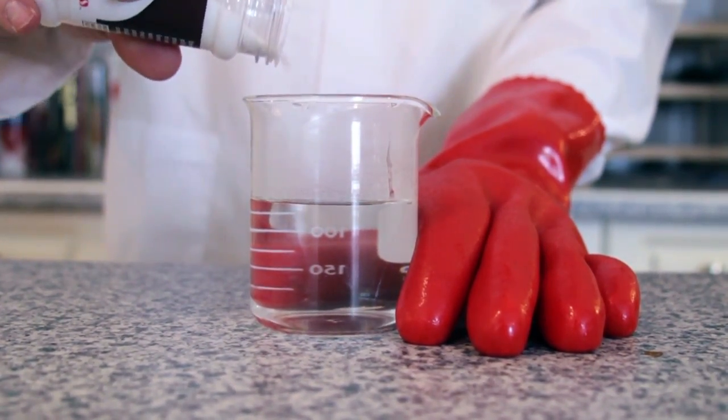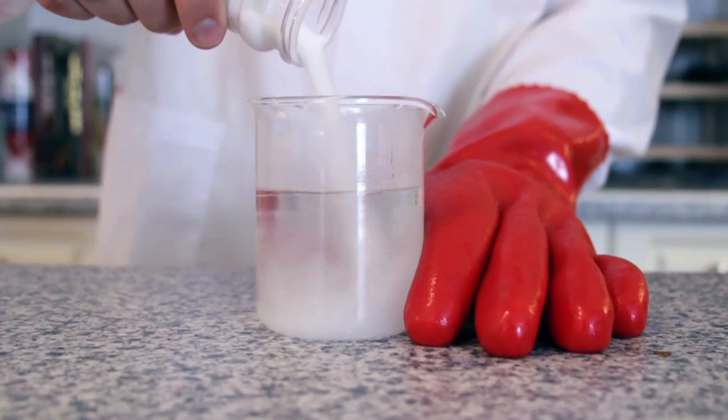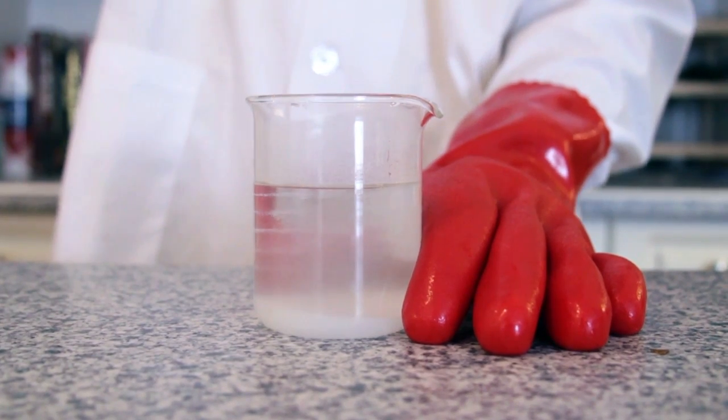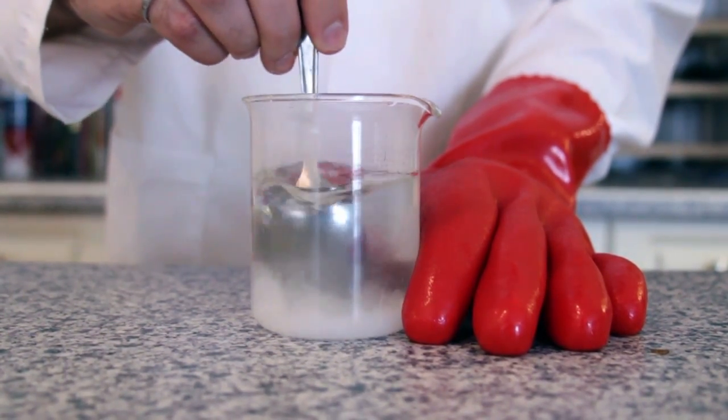Next, add a bunch of alum to your water. Stir your solution until all the alum has been dissolved into the water.